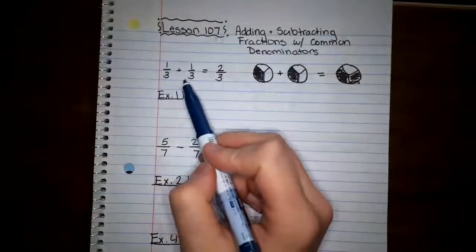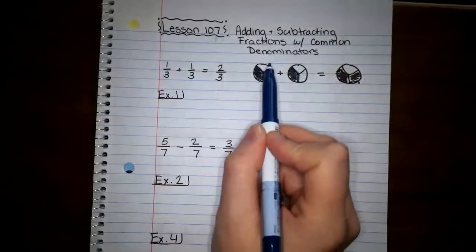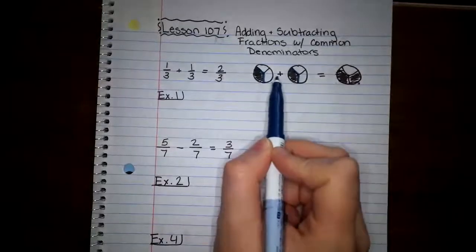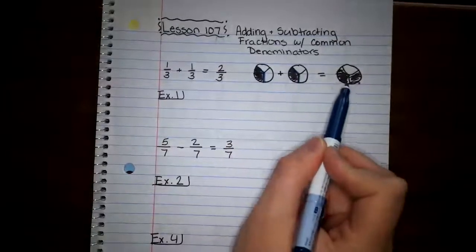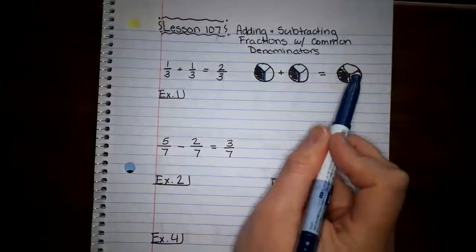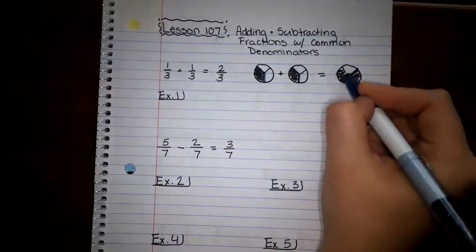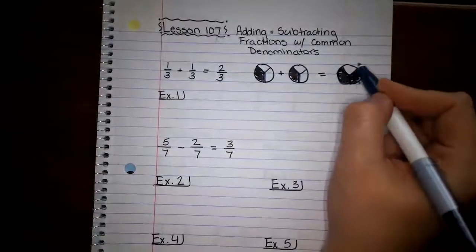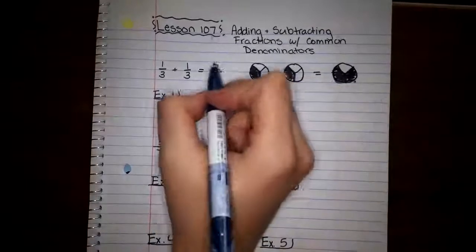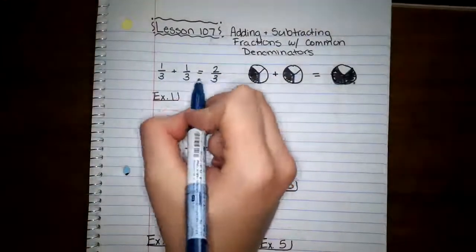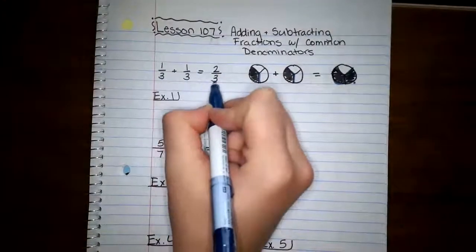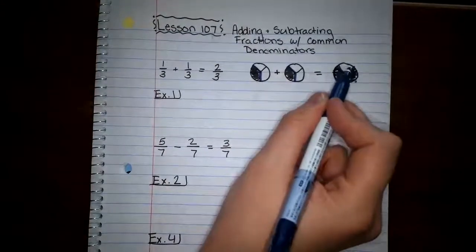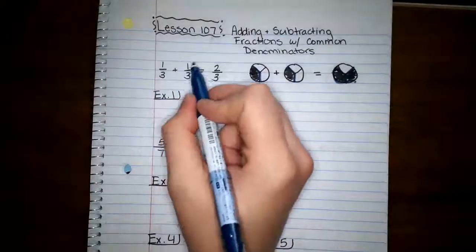So if we think about it this way, we have one third of our circle colored in plus another third of our circle. And if I take one third and I add the other third, so I take this third of it and then I color in this third of it, now I have two thirds colored in. Now that means that I took one plus one is two. My three did not change. I do not put a six here because I'm not actually splitting this into six parts. It still stays three parts. So one third plus one third gives me two thirds.